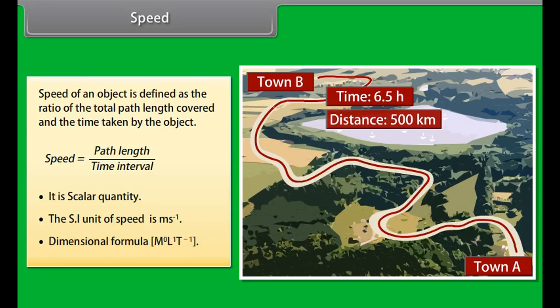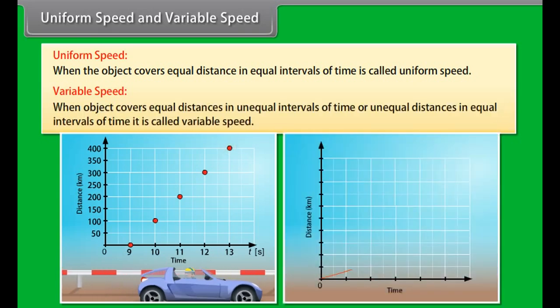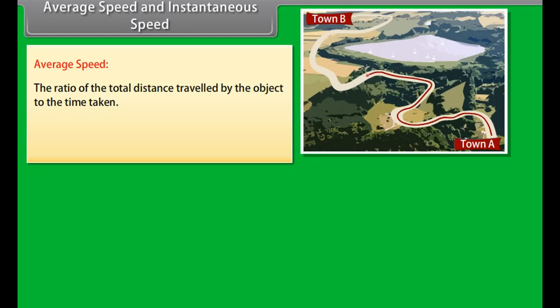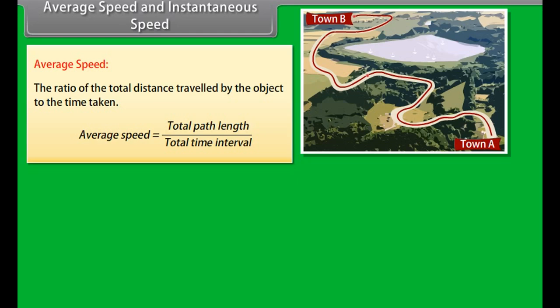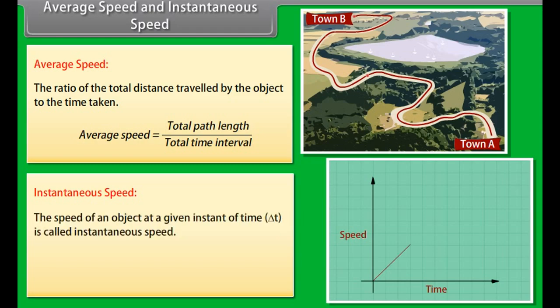Uniform speed: When an object covers equal distances in equal intervals of time, it is called uniform speed. Variable speed: When an object covers unequal distances in equal intervals of time, it is called variable speed. Average speed: The ratio of total distance traveled to the total time taken; average speed = total path length / total time interval. Instantaneous speed: The speed of an object at a given instant of time is called instantaneous speed.